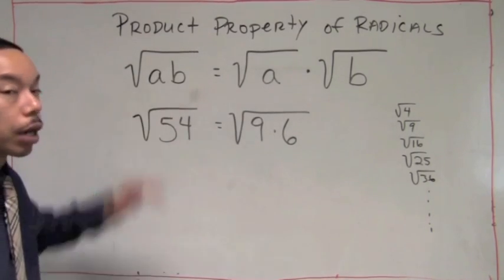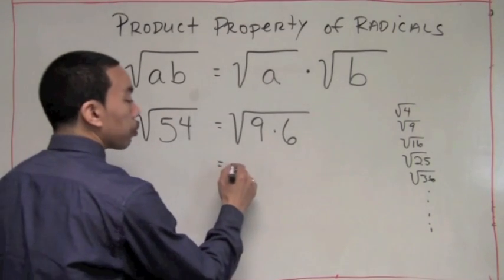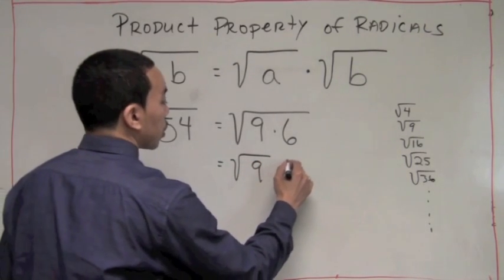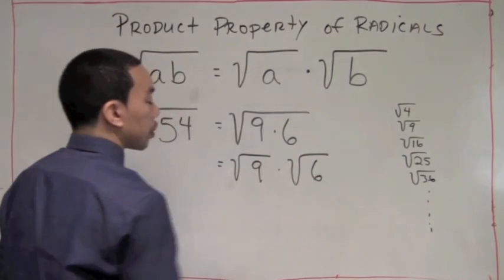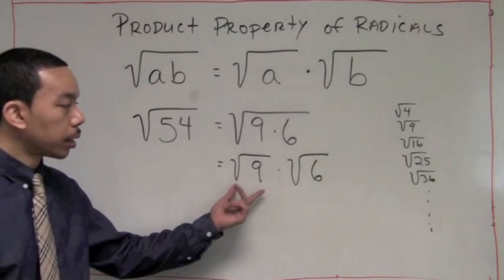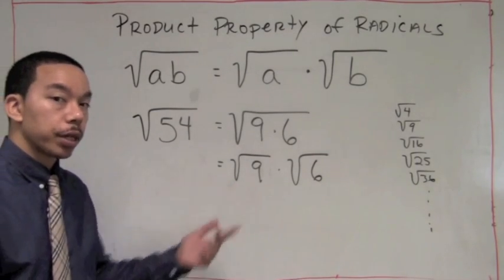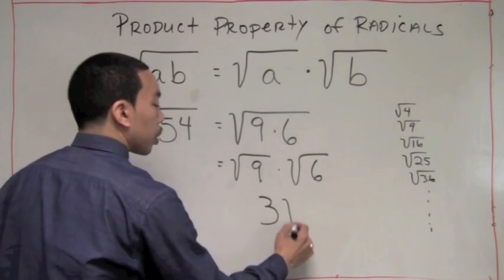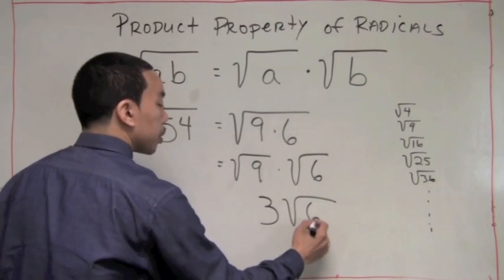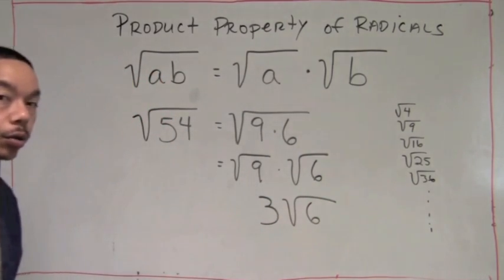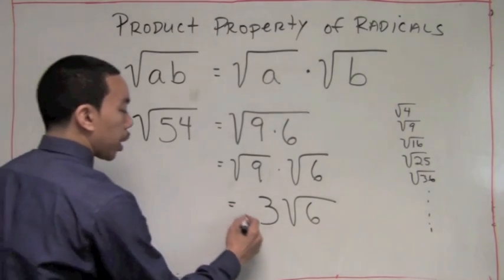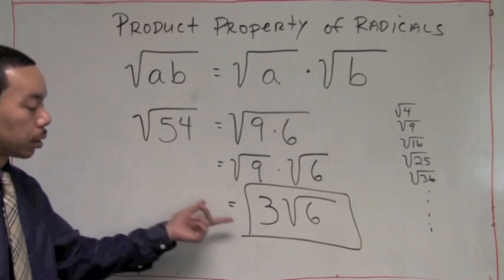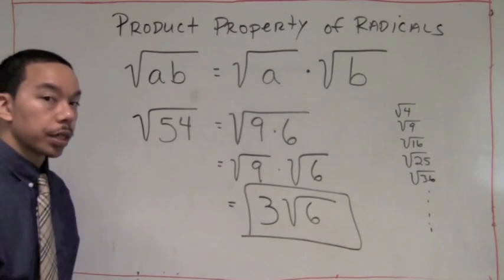Using the product property of radicals, we rewrite this as the square root of 9 times the square root of 6. The square root of 9 is a perfect square we just picked out — it equals 3. The square root of 6 can't be simplified, so we leave it under the radical symbol. Our answer is 3 times the square root of 6, so the square root of 54 equals 3 times the square root of 6.